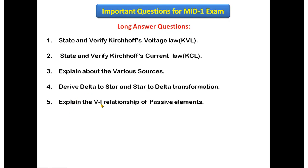The next question is: explain the V-I relationship of passive elements. The passive elements are resistors, inductors, and capacitors. You have to explain the V-I relationship for each of these — resistor, inductor, and capacitor.